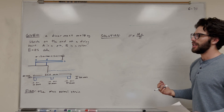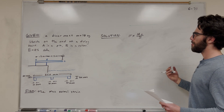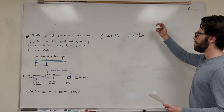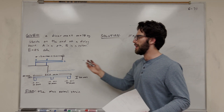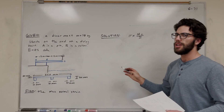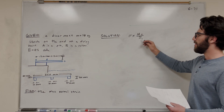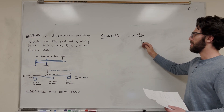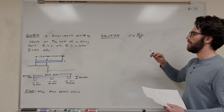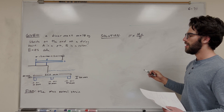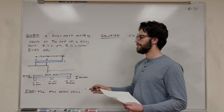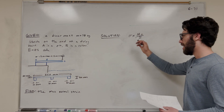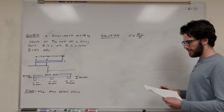So what are we going to need? We're going to need a couple things. We're going to need moment. We need to find where the moment is maximized on the diving board. Then we need to find the moment of inertia of the diving board, which we're going to use this cross-section for. That's going to help us find stress.